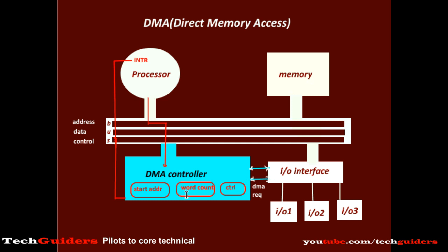The word count specifies from that starting address how many words in total are to be transferred between the peripheral. The control information specifies whether the data are to be written to memory locations or whether the data are to be read from memory locations and written to the I/O device — that is, whether it is a read from I/O operation or a write to I/O operation.